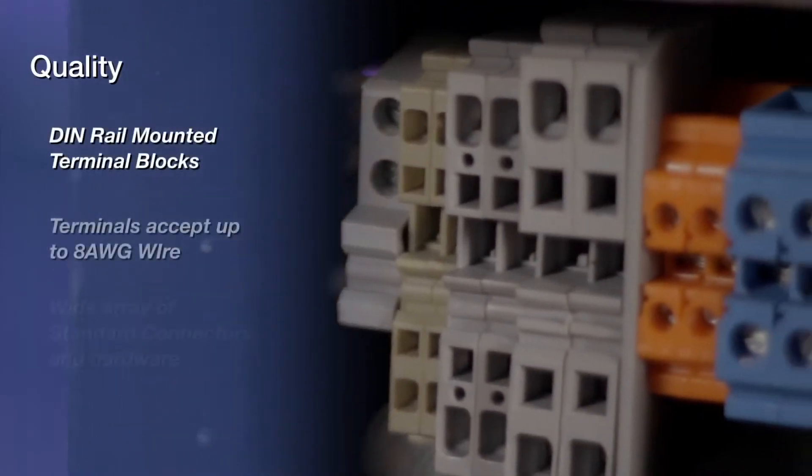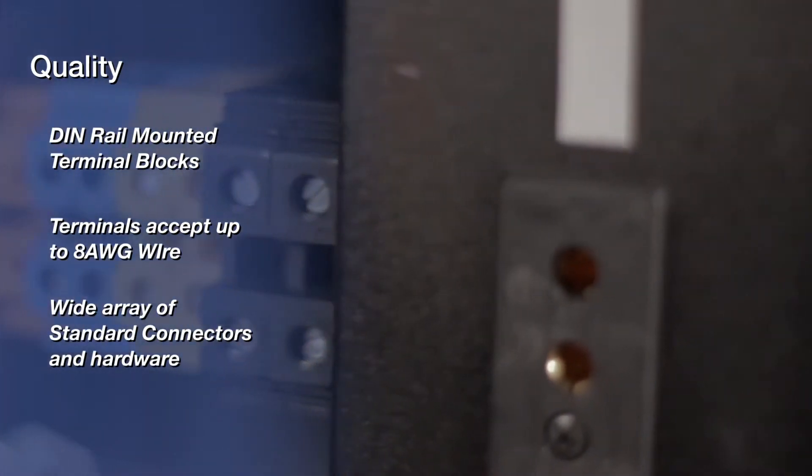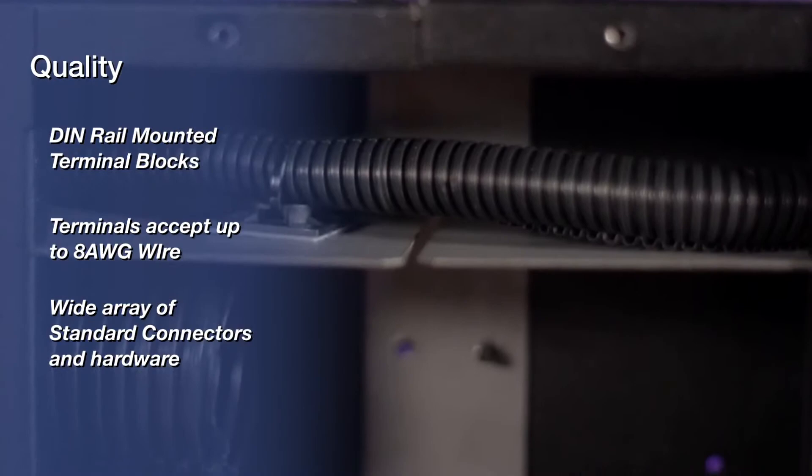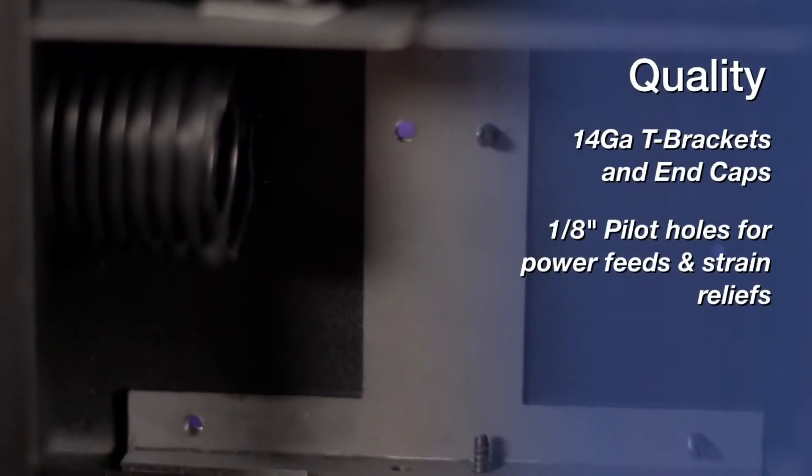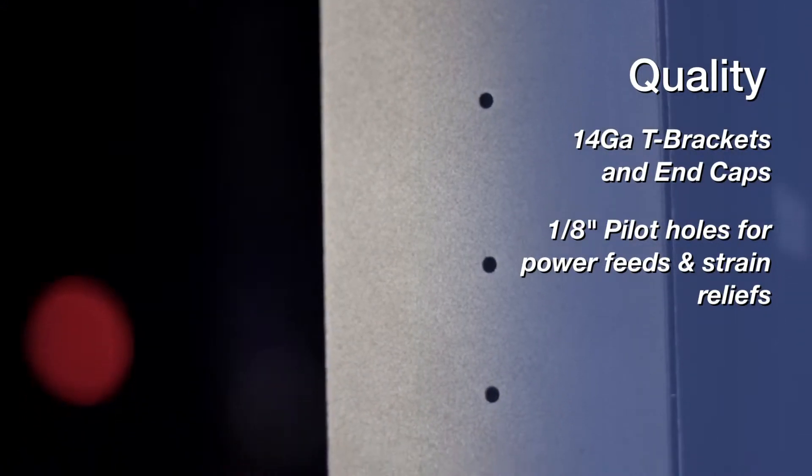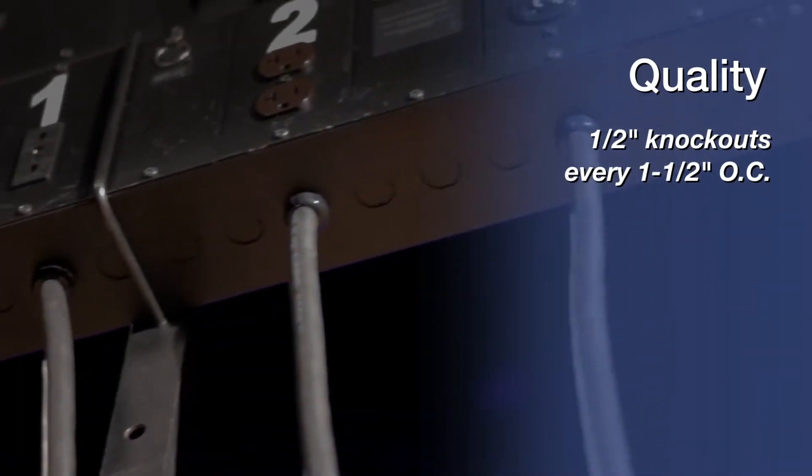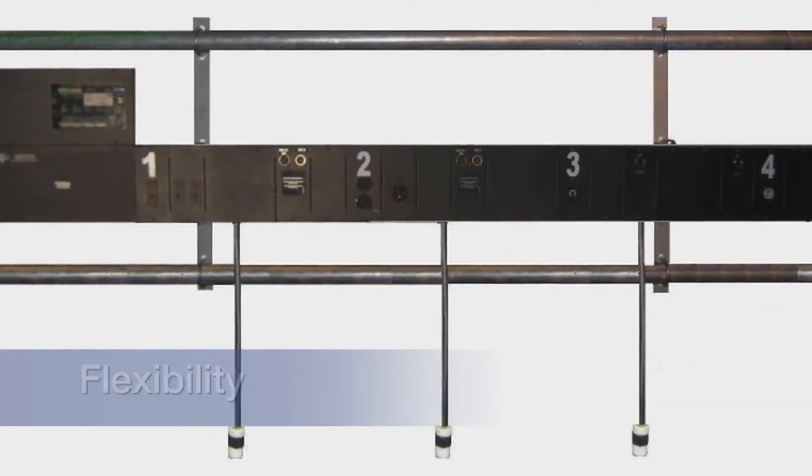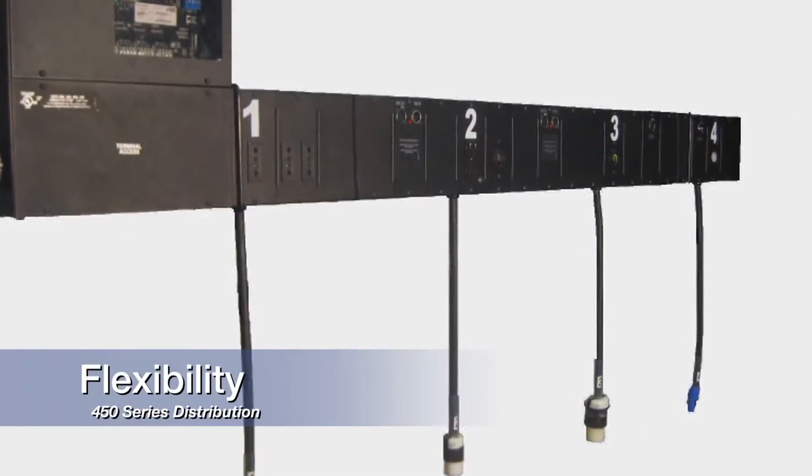All circuits are fed by DIN rail-mounted terminal blocks that accept up to 8-gauge wire as well as a wide array of available connector types and hanging hardware. All T brackets and end caps are 14-gauge steel with 8-inch pilot holes for side power feeds and strain relief connections. Half-inch knockouts are located every inch and a half on center throughout the length of the device.